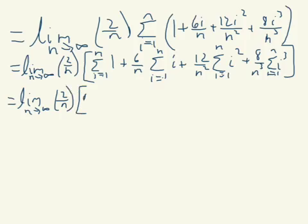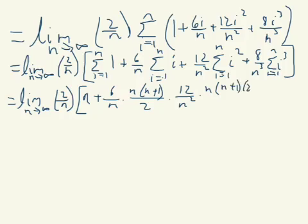This one will just be n. This one, 6 over n times the formula for i which is n times n plus 1 over 2. 12 over n squared times the formula for i squared, which is, I better look that one to make sure I get it right. Alright, it is n times n plus 1 times 2n plus 1 all over 6.